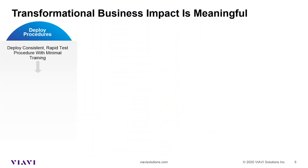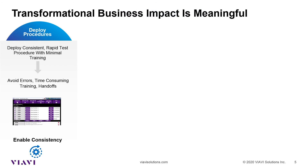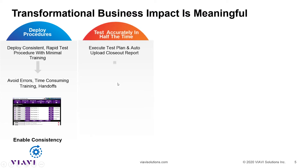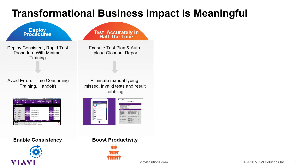The transformational business impact is really meaningful. Many of our customers utilizing this process are deploying consistent procedures and avoiding hours of errors, time-consuming training, and handoffs — they've enabled consistency for their business. Their teams are testing accurately in half the time, and this is happening around the world. Imagine how many more jobs you could do per day. They execute the test plan, avoid manual processes, avoid making reports because the report is created for them, and that really boosts their productivity and allows them to focus more on construction tasks, network handling, or interfacing with customers on-site.